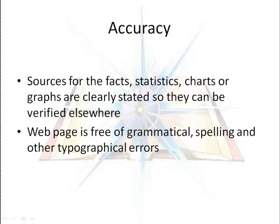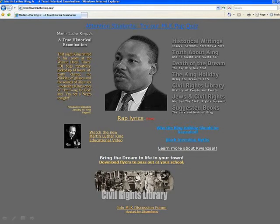A web page would be considered accurate if facts, statistics, charts, or graphs are clearly stated so they can be verified elsewhere. Also, the page should be free of grammatical, spelling, or other typos. On this page, martinlutherking.org, there are no numbers to verify, and the text seems free of typos and grammatical errors.